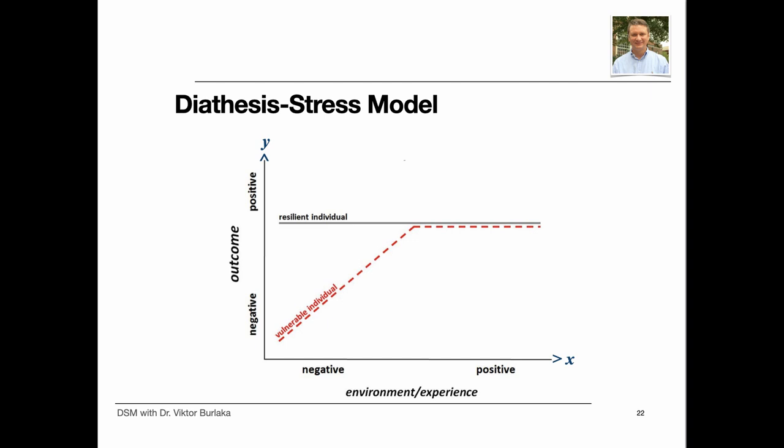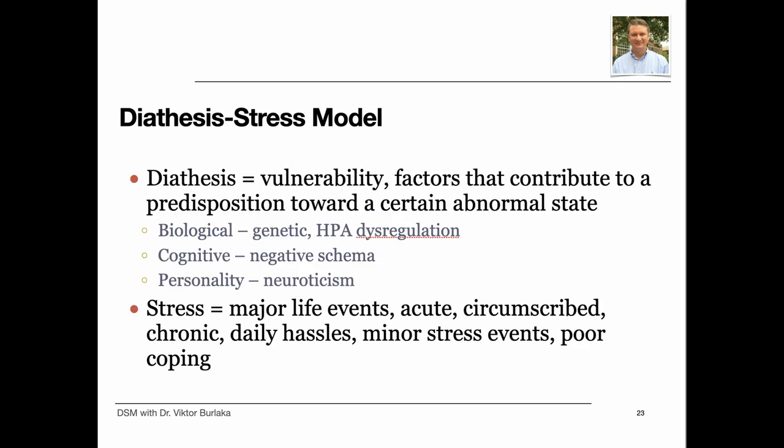This is the graphical display of the diathesis-stress model. The x-axis indicates quality of the environment experiences from negative to positive. The y-axis indicates the developmental outcome from negative to positive. The lines depict two groups of individuals that differ in their responsiveness to a negative environment. The vulnerable group is shown with the red line — this group shows a negative outcome when exposed to a negative environment, while the resilient group is not affected by it. However, there are no differences between the two groups in a positive environment. The diathesis-stress model asserts that if the combination of the predisposition and the stress exceeds a threshold, the person will develop a mental disorder.